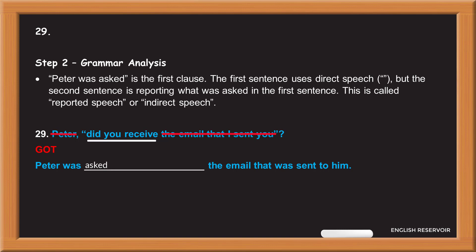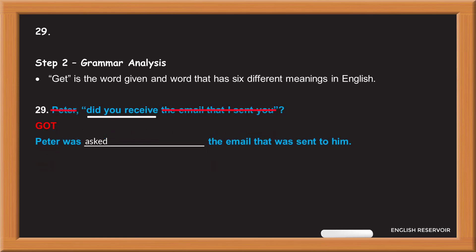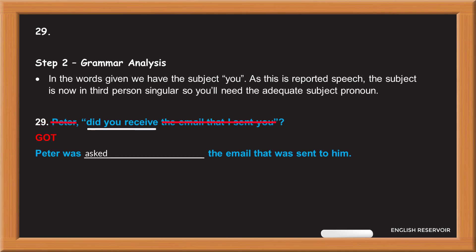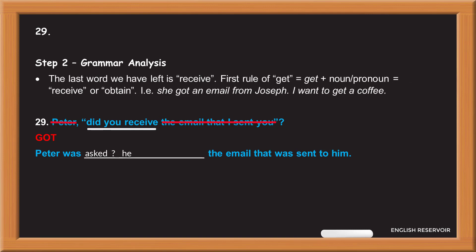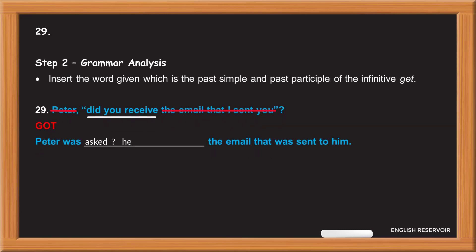'Peter was asked' is the first clause. The first sentence uses direct speech, but the second sentence is reporting what was asked — this is called reported speech or indirect speech. 'Get' is the word given and a word that has six different meanings in English. As this is reported speech, the subject is now in third person singular, so you'll need the adequate subject pronoun. The last word to modify is 'receive'. First rule of get: get plus noun or pronoun equals receive or obtain — e.g., 'She got an email from Joseph', 'I want to get a coffee'. Insert the word given, which is the past simple and past participle of the infinitive 'get'.